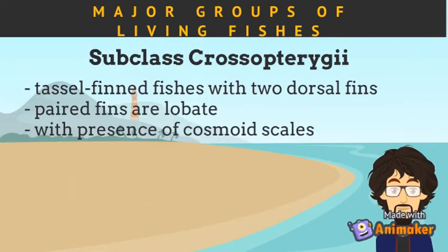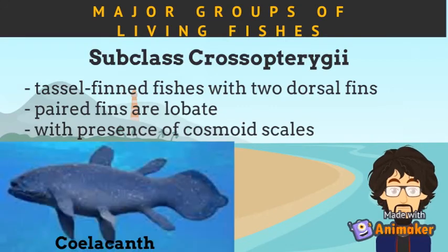Subclass Crossopterygiae are tassel-finned fishes with two dorsal fins. They have paired lobate fins and their body has cosmoid scales. The once-thought-extinct coelacanths are the example of fish under this subclass.